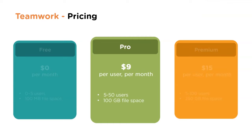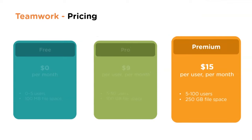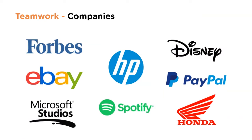Teamwork pricing: the free tier supports 0 to 5 users with 100 MB file space. The Pro version supports 5 to 50 users with 100 GB file space at $9 per user per month. Premium costs $15 per user per month, supporting 5 to 100 users with 250 GB file space. Organizations using Teamwork include Forbes, eBay, Microsoft Studios, HP, PayPal, Disney, and Honda.